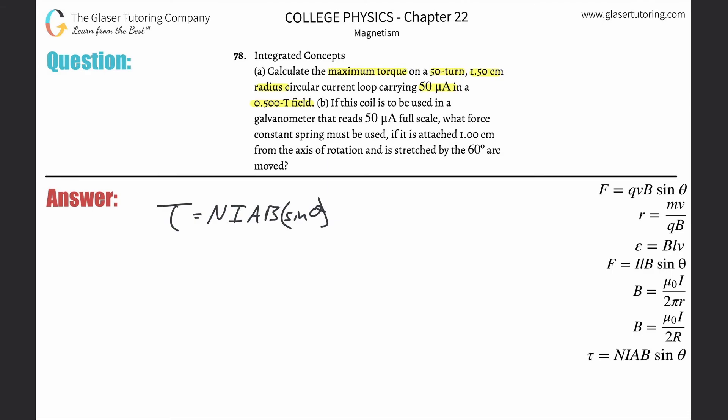Remember, sine of any angle is between 0 and 1 inclusive. An angle of 90 degrees gives sine of 90 equal to 1, so that would be maximum. We can cancel that out because it's just a value of 1.